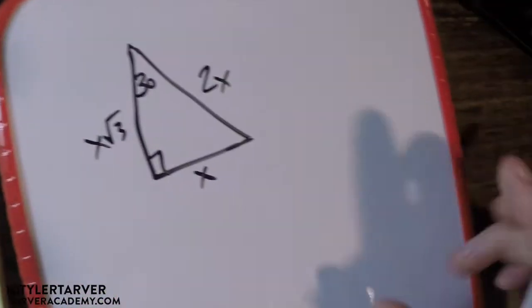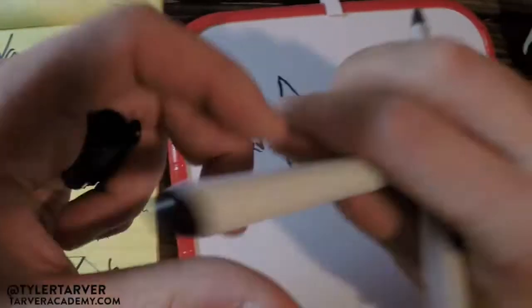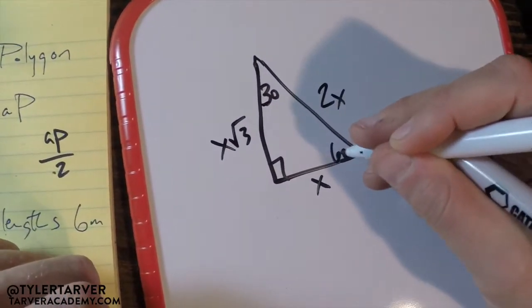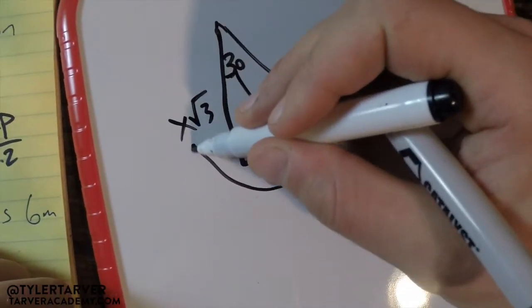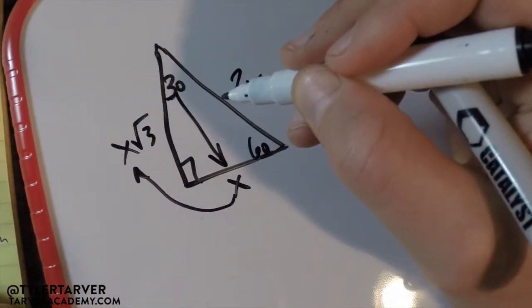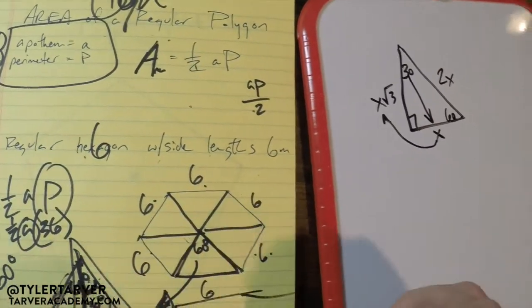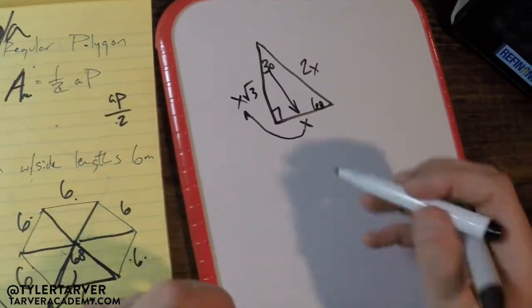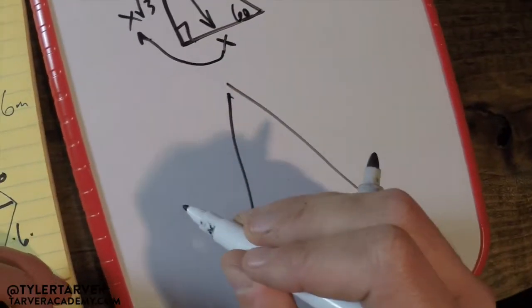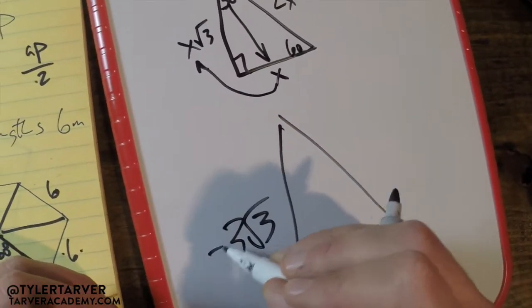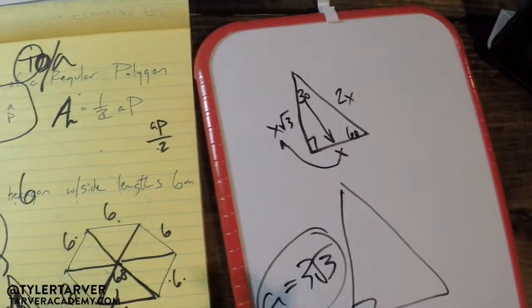That means it is a 30, 60, 90 triangle, which means that whatever's opposite to 30, you can just multiply by a radical three and get that side. Dope, yo. So I'm going to redraw my triangle over here. I got this. I know this is three. That means this has to be three radical three, which is my apothem.